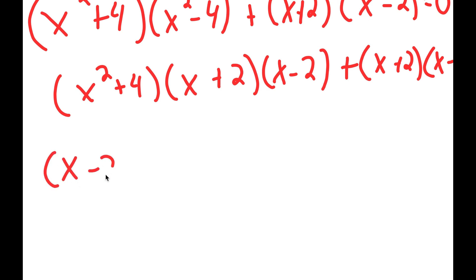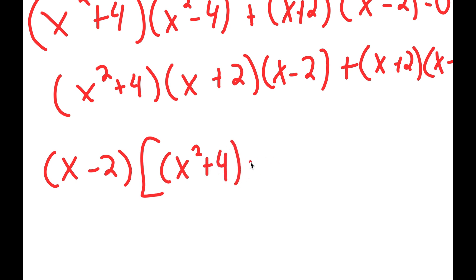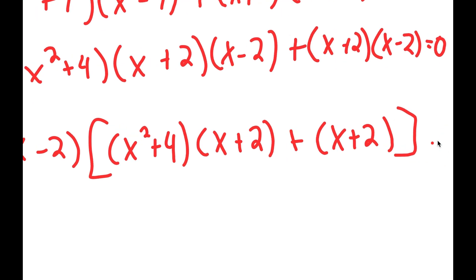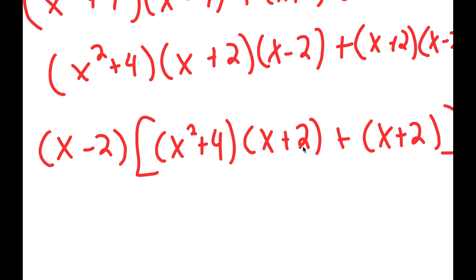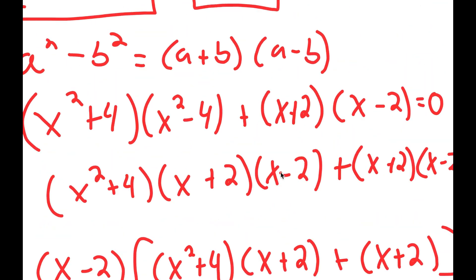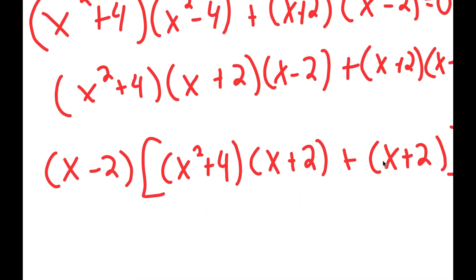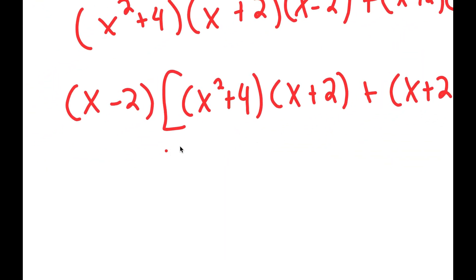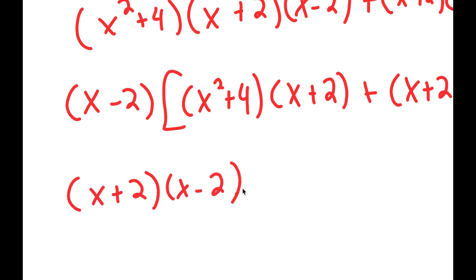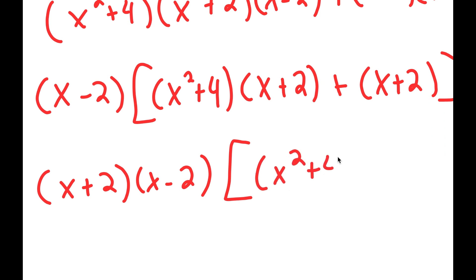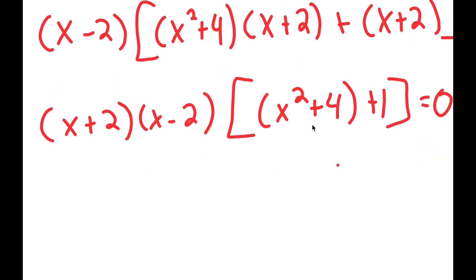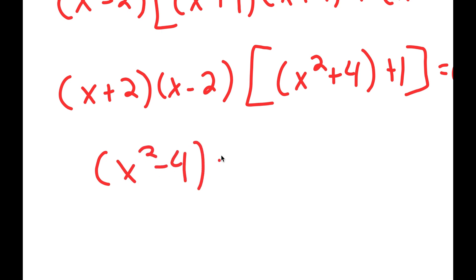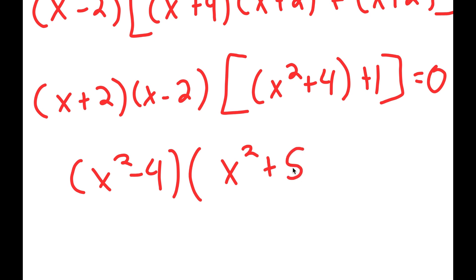Now I'm going to factor out x minus 2. So I get x minus 2 times x squared plus 4 times x plus 2 plus x plus 2, which is equal to 0. And notice how we can also factor out x plus 2 as well. We can rewrite x squared minus 4 as x plus 2 times x minus 2, so factoring gives us x plus 2 times x minus 2 times x squared plus 4 plus 1, which equals x squared minus 4 times x squared plus 5, equal to 0.